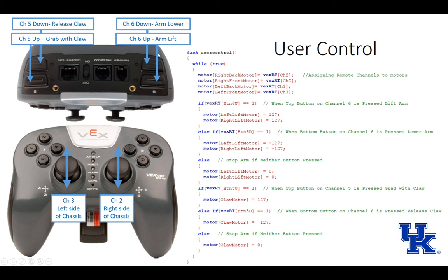We have that for both my left side and right side of the chassis. Then we have these buttons up on top, which is like a light switch where it goes always on or always off. I'm going to start the same command—motor right back motor, set that equal to VEX remote channel two, which is the one listed here.